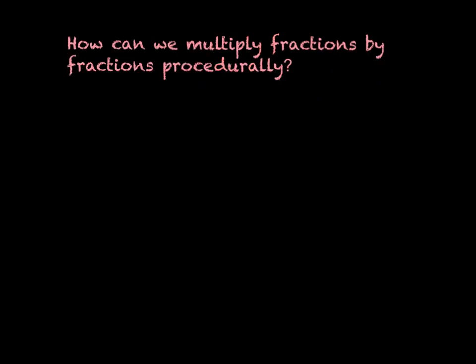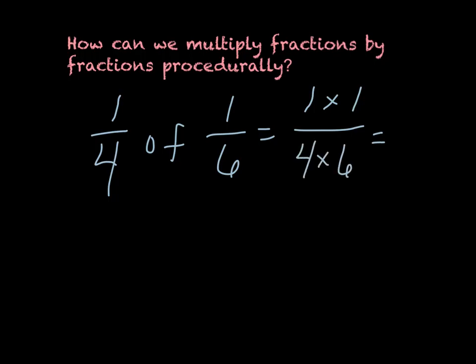What does that look like procedurally? So we had our problem. We were trying to find out what is one-fourth of one-sixth. Well, when multiplying fractions, it's actually a pretty simple operation. We multiply straight across. So we are going to multiply our numerators by our numerators, and we're going to multiply our denominators by our denominators, and we will get our answer: one times one equals one, and four times six equals twenty-fourth.